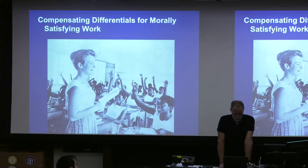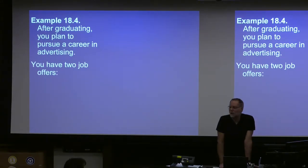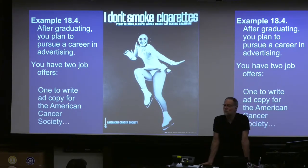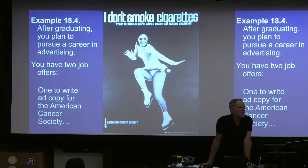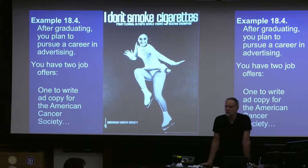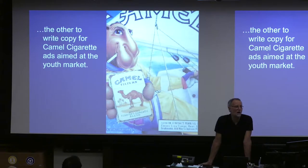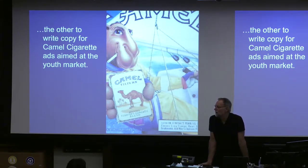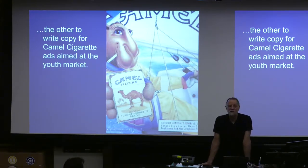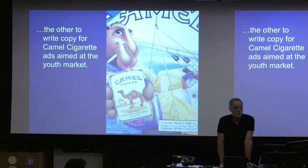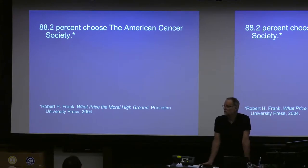We put this idea to the test by asking Cornell seniors which job they would take out of a pair. In one case, you could write ad copy for the American Cancer Society trying to discourage kids from smoking — opening salary $30,000. The other choice was to work for RJR writing ad copy urging kids to try Camel cigarettes, with the same office, travel budget, and $30,000 salary. 88% of the people in the survey chose the American Cancer Society job.